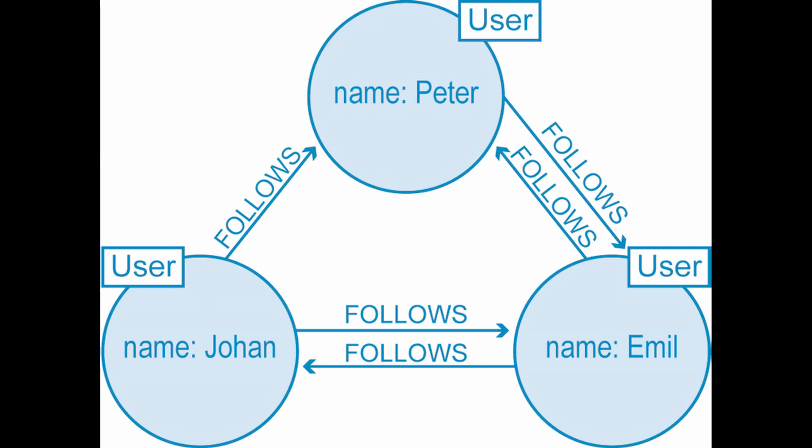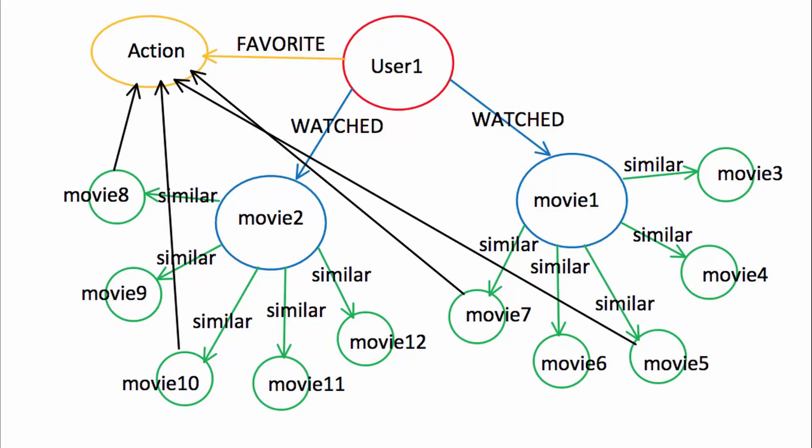This is a simple representation of a property graph. Why do we need one? Say I have a use case where I need to capture the interests of a person who resides in New York or a specific town — specifically what kind of movies they watch, like action, comedy, romantic, or superhero movies. The most suitable database for capturing such interest linkages is a graph database.